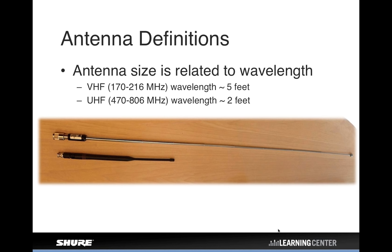The size of the antenna is related to the wavelength of the frequency you're trying to pick up. The two examples here are both what we'd consider a half-wave antenna, named because the length is one half of the wavelength of the target frequency. The top antenna is for a VHF system where wavelengths are about five to six feet long. The bottom is a UHF half-wave antenna where wavelengths are about two feet — which is why you see different-sized antennas for VHF and UHF systems.